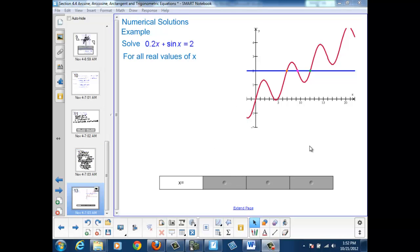Here's a final example where our equation has conditions that make it impossible to apply any of the arc functions to obtain a solution. We have the equation 0.2x plus sine x equals 2.